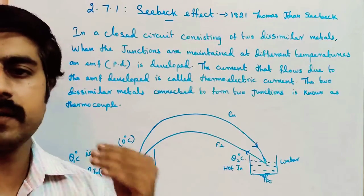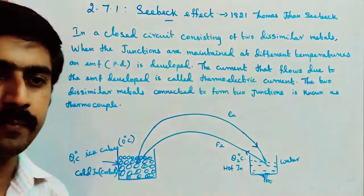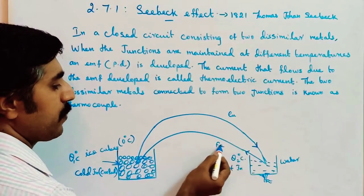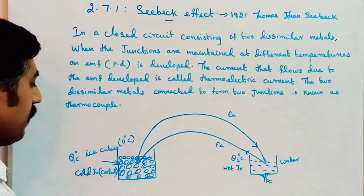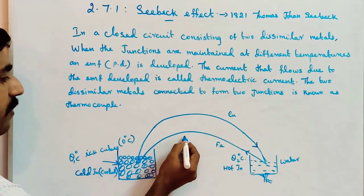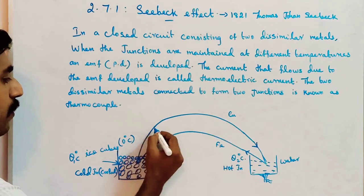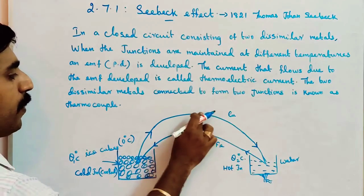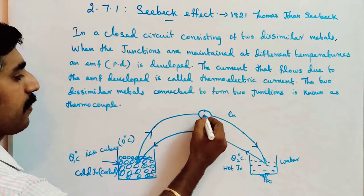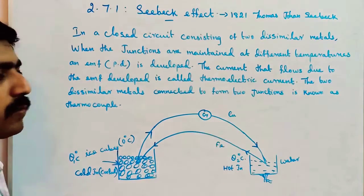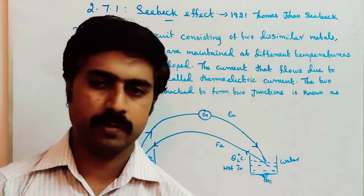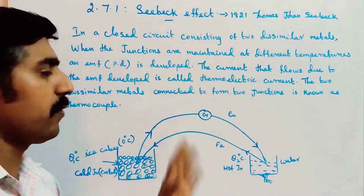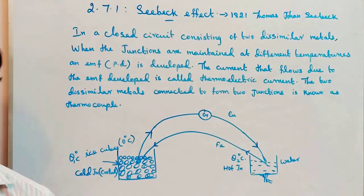At the hot junction, current flows from copper to ferrous. At the cold junction, current flows from ferrous to copper. To measure the electric current in the circuit, based on the temperatures, we need to connect a sensitive galvanometer.